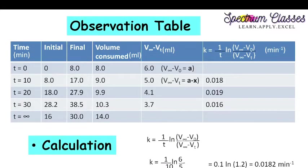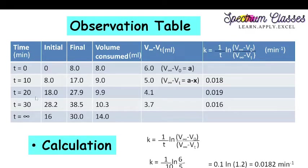Now the observation table and calculations. At t = 0: initial burette reading = 0, final reading = 8 ml, so volume of NaOH consumed = 8 ml. At t = 10 min: initial = 8.0, final = 17.0, so volume consumed = 9 ml. At t = 20 min: volume consumed = 9.9 ml. At t = 30 min: volume consumed = 10.3 ml. For t = infinity: volume of NaOH consumed = 14 ml.